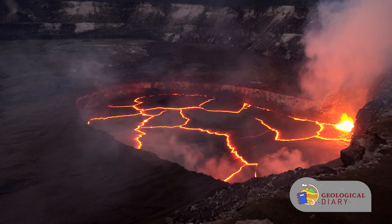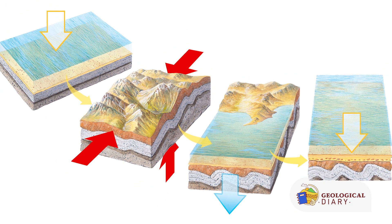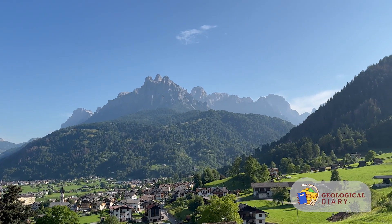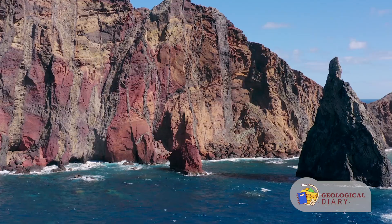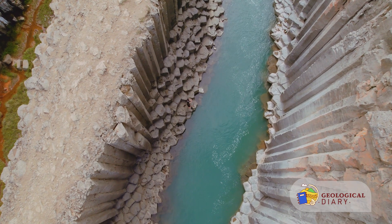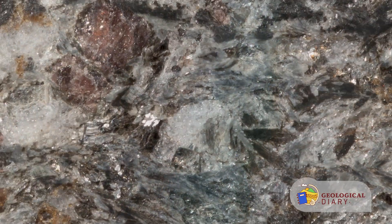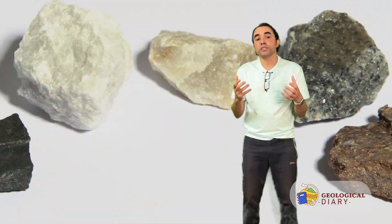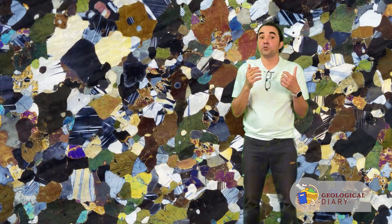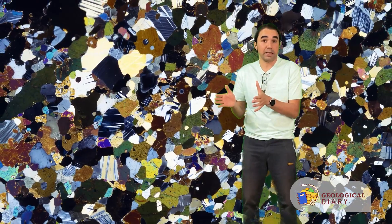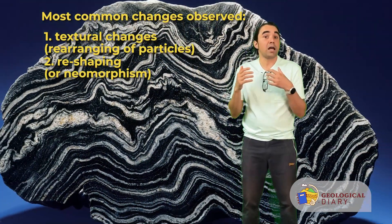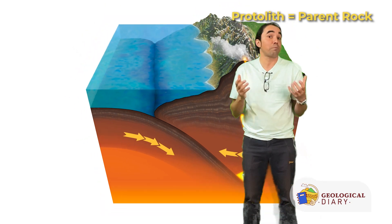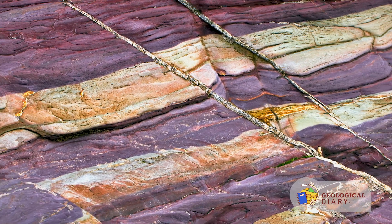Now consider this: crystallization of igneous rocks or newly formed sedimentary rocks after deposition and lithification can be subjected to high pressures and temperatures — for example, as they get involved in the dynamics of mountain building like in the Alps in Italy, or intruded by a mass of magma. The constituent minerals of both igneous and sedimentary rocks will undergo transformation through time to form new minerals or rearrange under high pressures and temperatures to form metamorphic rocks. The word metamorphosis implies change; the most common changes observed are textural changes, reshaping, neomorphism, and mineral genesis, depending on the burial history of the parent rock.